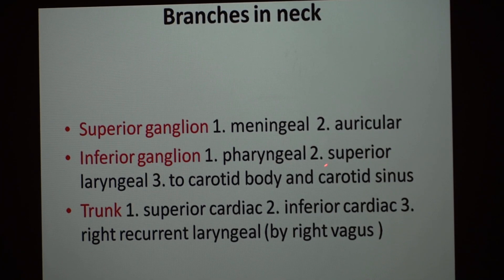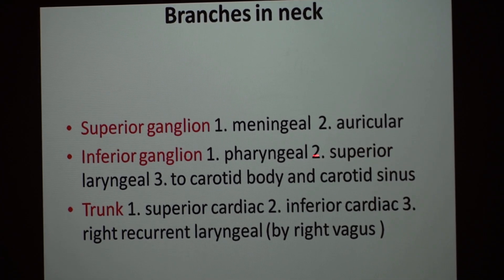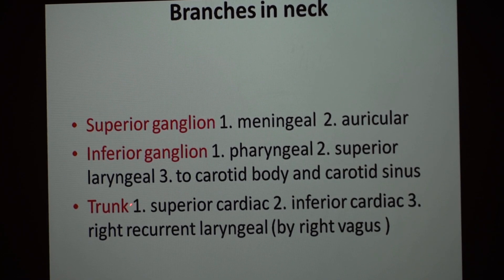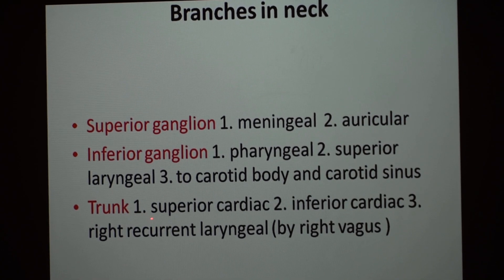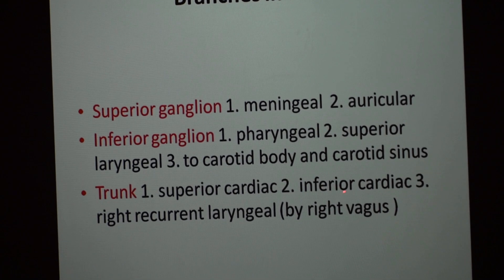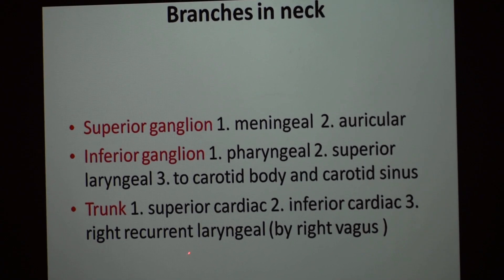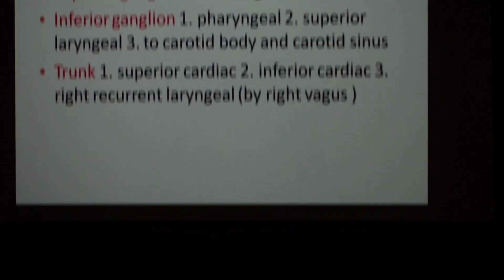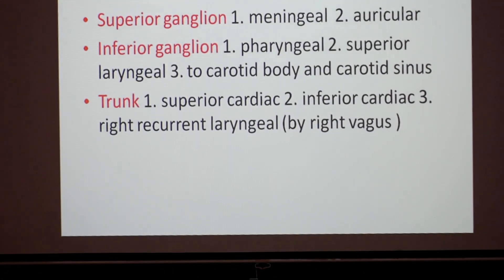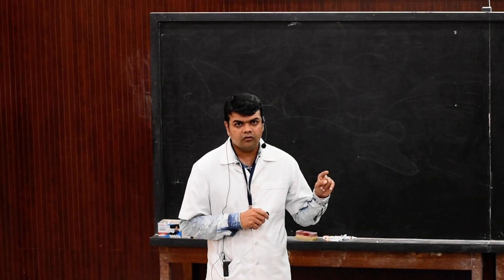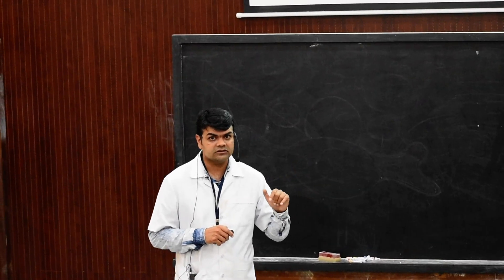From the inferior ganglion: branches to the pharynx, branches to the larynx as the superior laryngeal nerve, and branches to the carotid body and carotid sinus. From the main trunk of the vagus nerve, it gives the superior cardiac nerve, inferior cardiac nerve, and the right recurrent laryngeal nerve. Note that it is only the right recurrent laryngeal nerve given in the neck; the left recurrent laryngeal nerve is given in the thorax.